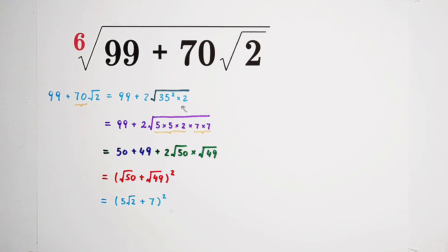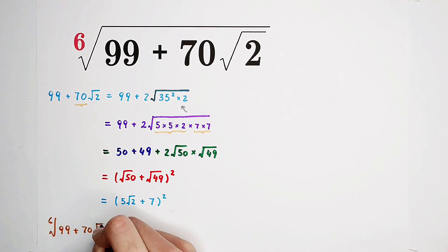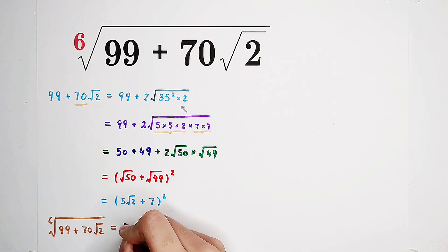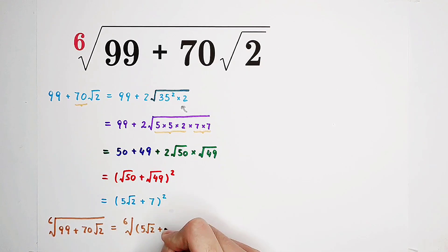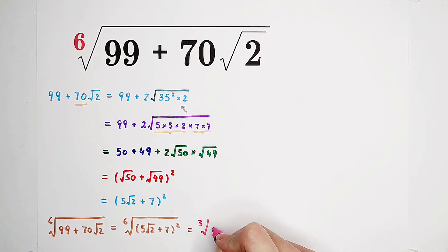Then, that means the sixth root of 99 plus 70 times square root of 2 is the sixth root of (5 root of 2 plus 7) all squared. The 6 and the 2 can be cancelled, leaving 3. So it is just the cube root of (5 root of 2 plus 7).